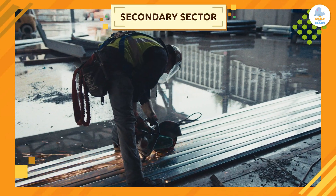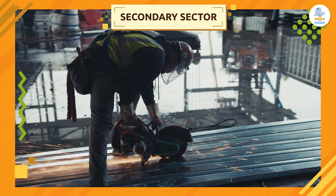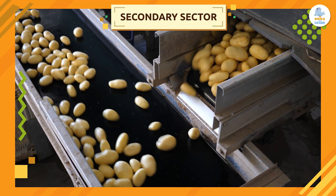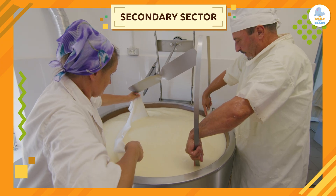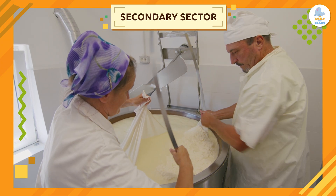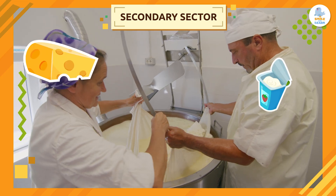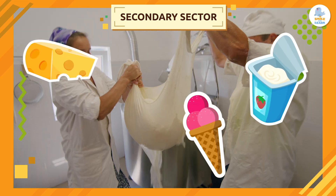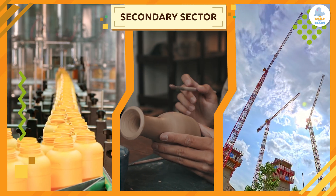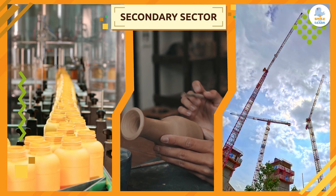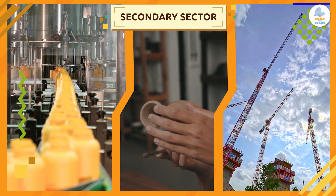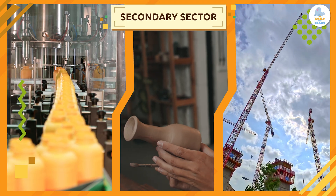The secondary sector, also known as the industrial sector, is responsible for transforming raw materials or natural products from the primary sector into manufactured products. In other words, in the secondary sector, someone turns that milk we saw before into cheese, yogurt, or the magical invention of ice cream! The main activities of the secondary sector are industry, craft work, and construction.